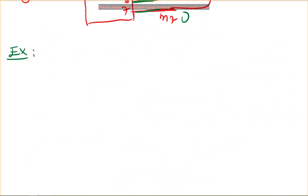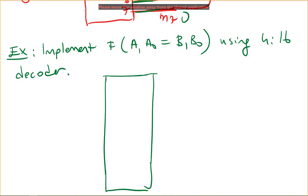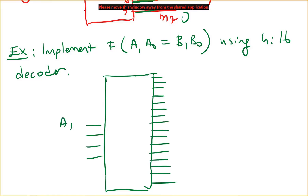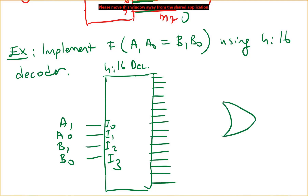Let's do another example. We have inputs a1, a0 and b1, b0, and we need to implement a two-bit equality circuit using a four-to-sixteen decoder. We draw our decoder with sixteen outputs and four inputs: a1, a0, b1, b0 mapped to i0, i1, i2, i3. We will connect an OR gate to the relevant outputs.